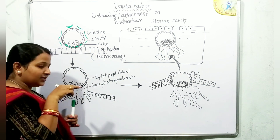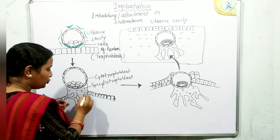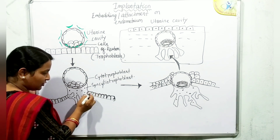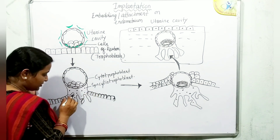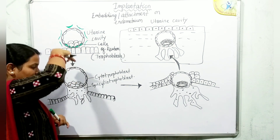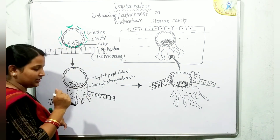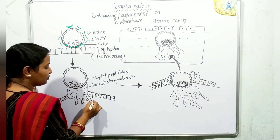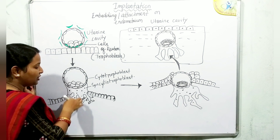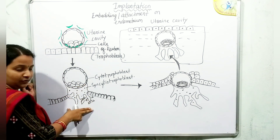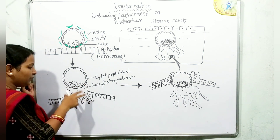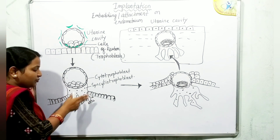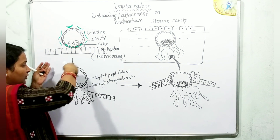This multi-nucleated branched structure tries to invade the endometrium through intercellular spaces. Simultaneously, it releases proteolytic factors or enzymes which digest the endometrial cells, and gradually a pit is formed.